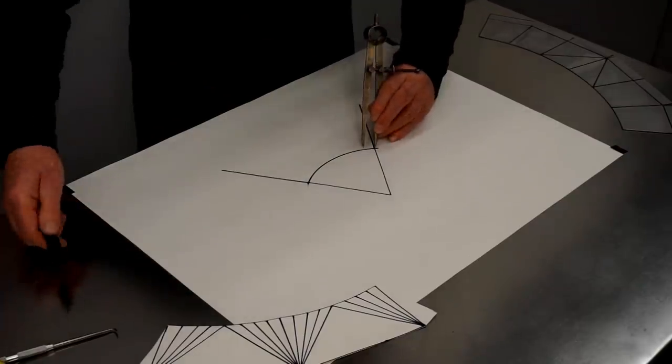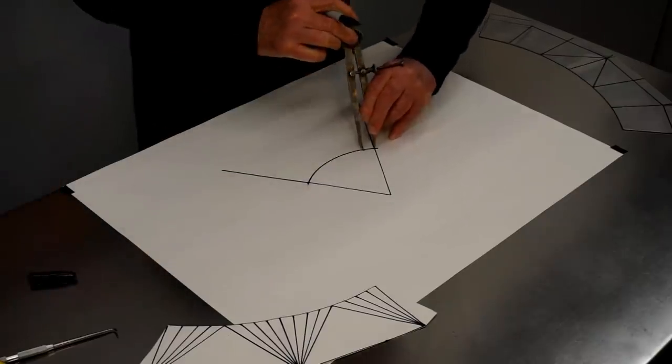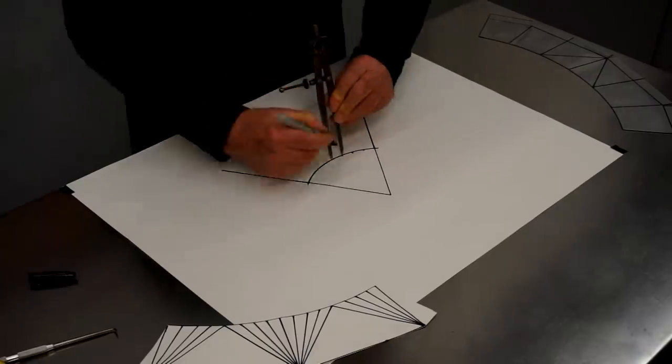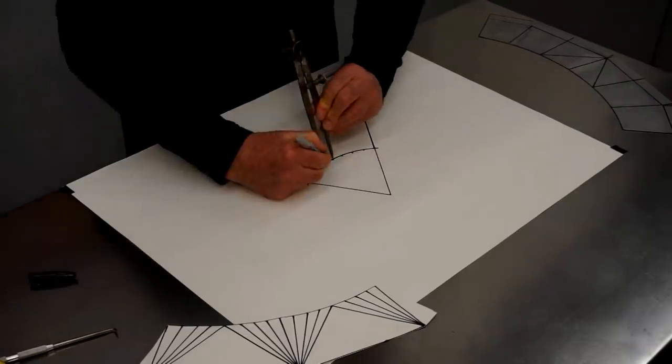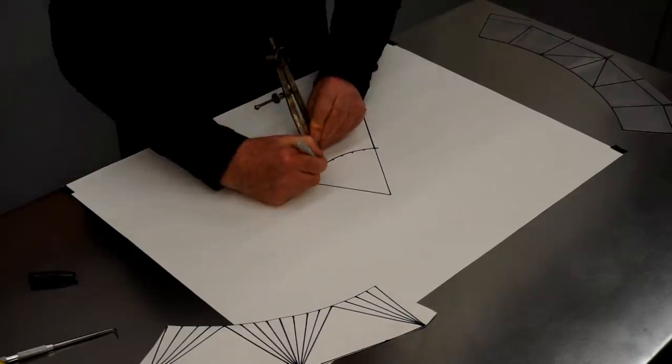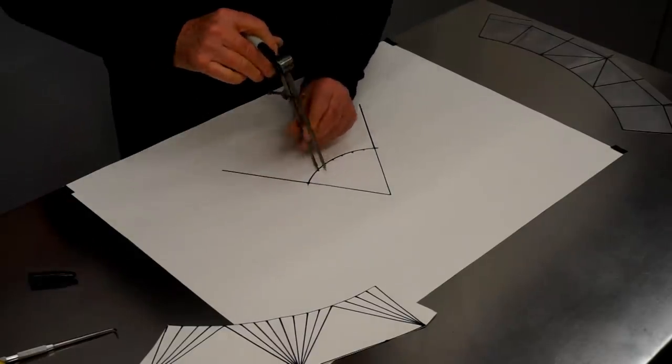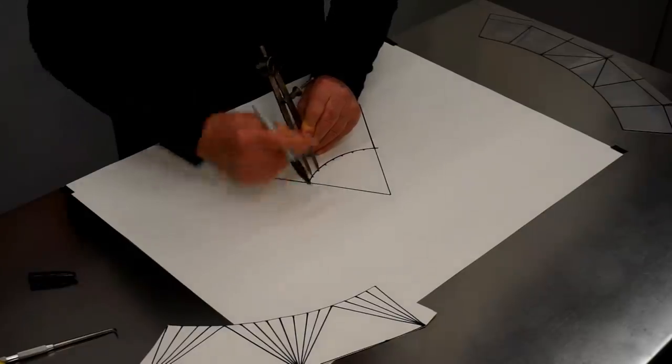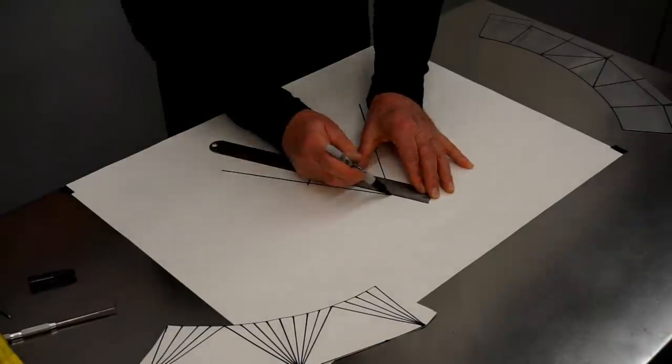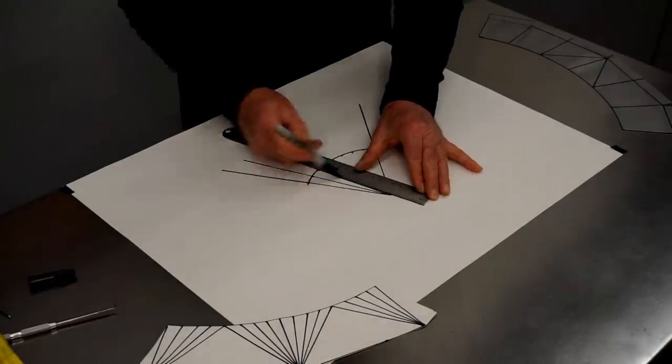So I'll use my felt tip marker to mark these on the paper. You could actually get better precision using a sharp pencil for this. I'm using a pen so it shows up on the camera better. Okay, so there's our eight equal divisions. And now I'll draw lines from this apex through those points I've just laid out.